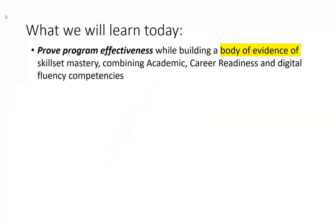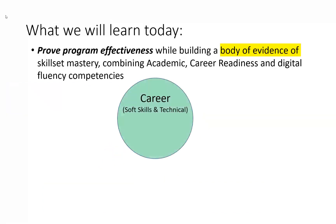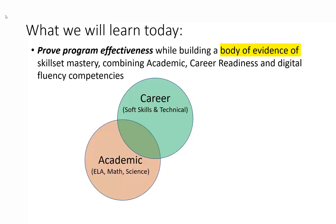The way we prove program effectiveness is to show how each competency reinforces the other. So claims about career competencies — whether they're soft skills or technical — are supported by the academic and by the digital, and we'll show the method of how we build this body of evidence.